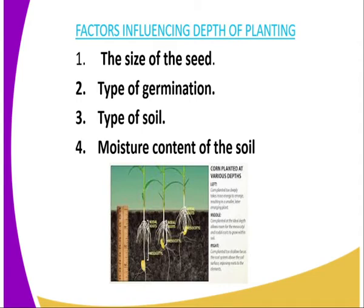When it comes to the type of germination, we have two types. We have epigeal germination, that is for dicots, and we have hypogeal germination, that is for monocots. Because in epigeal germination the shoot normally grows upward, the depth of planting for dicots is shallow compared to that of hypogeal germination. Therefore, hypogeal germination seeds require a greater depth when planting.